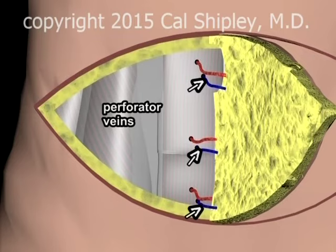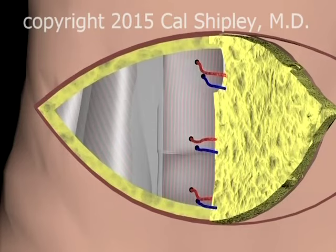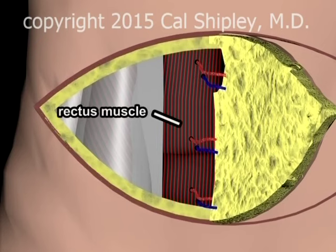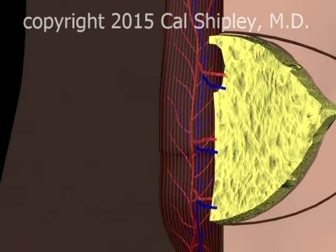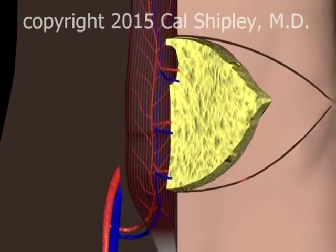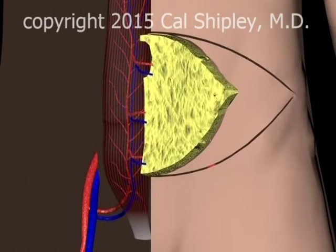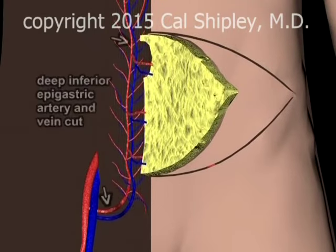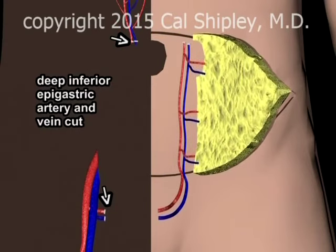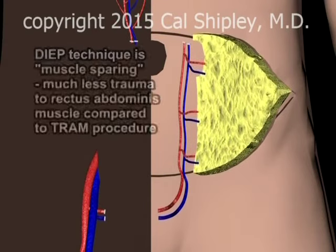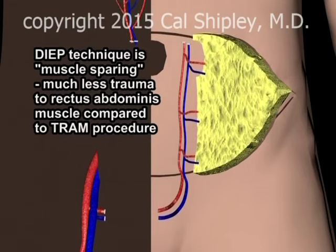Perforator veins must also be identified, as they will be harvested along with the arteries. Perforator arteries and veins are then dissected free of the rectus muscle and divided at their attachment to the iliac artery and vein. The amount of trauma to the rectus muscle caused by the dissection of the vascular structures is relatively small, and this is a critical difference between the DIEP and the TRAM techniques for breast reconstruction.